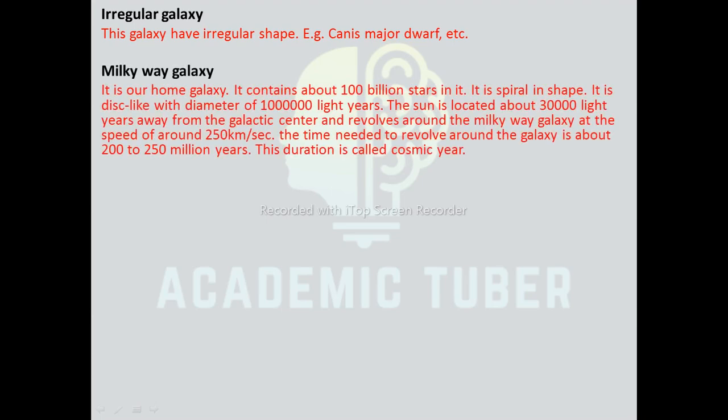Milky Way galaxy: it is our home galaxy and contains about 100 billion stars. It is spiral in shape and disc-like with a diameter of one lakh light years. The Sun is located about 30,000 light years away from the galactic center and revolves around the Milky Way galaxy at a speed of around 250 kilometers per second. The time needed to revolve around the galaxy is about 200 to 250 million years, and this duration is called the cosmic year.